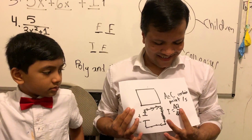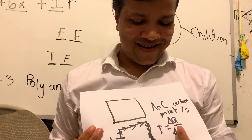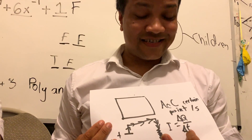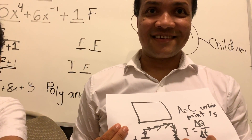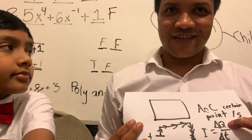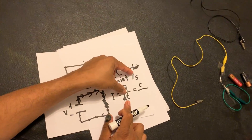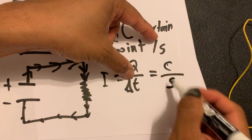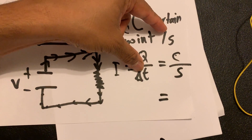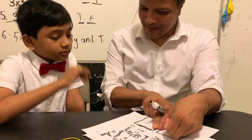So I is the symbol for current, Q is the symbol for charge, and delta T is the change in time. Current is the change in charge over change in time. The unit for Q is the coulomb, and we already know the unit for time is the second. So coulomb per second — and there is a name for that: ampere.